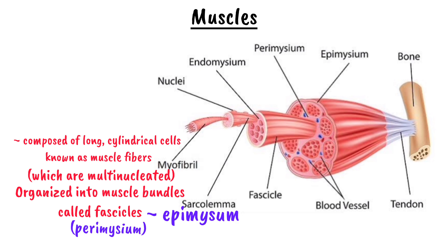For skeletal muscles to function, they require signals from the somatic nervous system, which allows voluntary control over movement. This is in contrast to the other two types of muscles, which operate involuntarily.